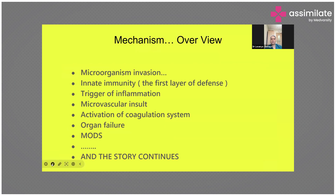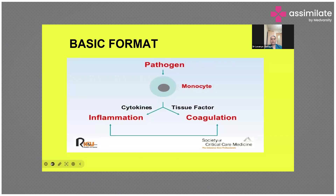The mechanism is: invasion of microorganisms leads to disturbance of the first layer of immunity, triggering inflammation, leading to microvascular injury, activation of the coagulation system, organ failure, ultimately MODS. When a pathogen — any bacteria, virus, or fungus — invades the blood, it activates monocytes, which release cytokines and tissue factor. Cytokines cause inflammation and tissue factor causes coagulation. Sepsis is therefore a combination of inflammation, coagulation, and infection.